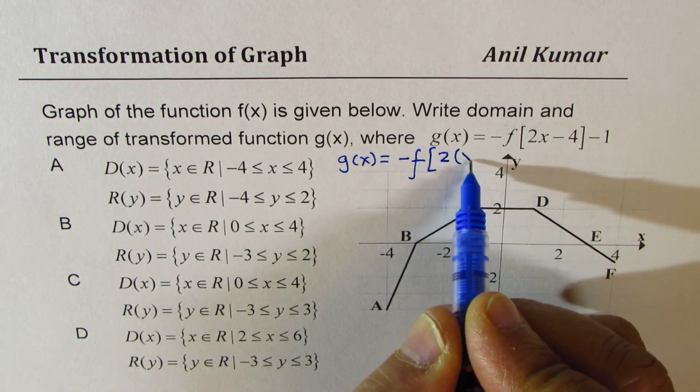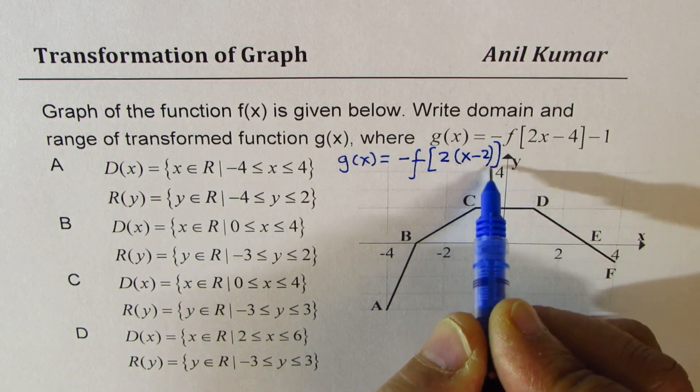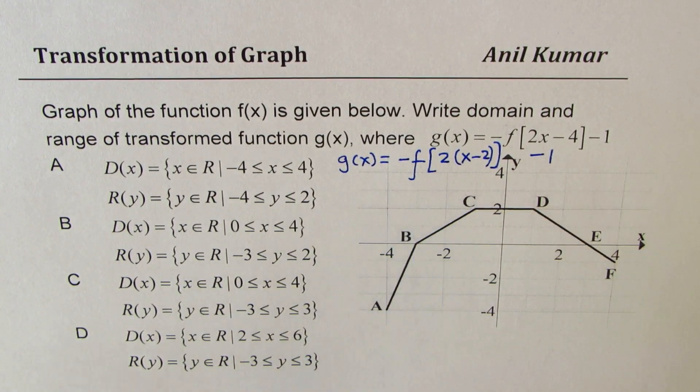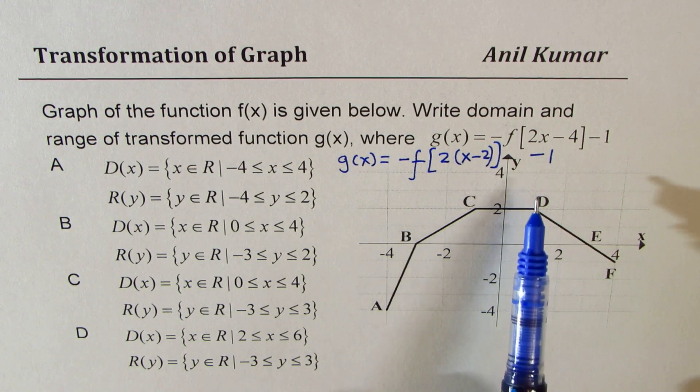we'll get x minus 2 minus 1. Now that transformation indicates that there is a reflection on x-axis. The graph will be horizontally compressed by a factor of half, translated 2 units right and 1 unit down.